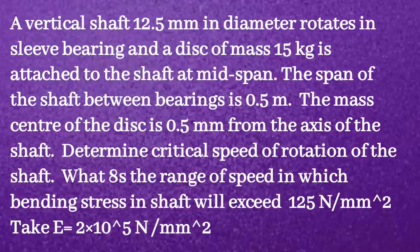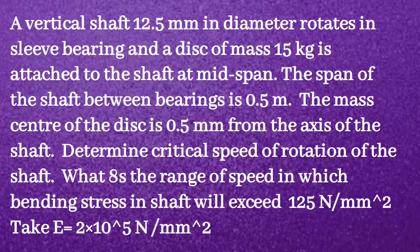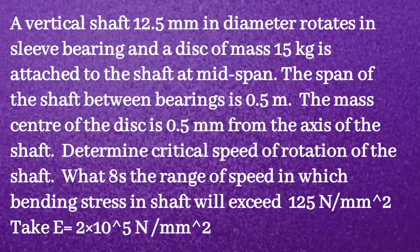Given question: a vertical shaft 12.5 mm in diameter rotates in a sleeve bearing, and a disc of mass 15 kg is attached to the shaft at mid-span. The span of the shaft between bearings is 0.5 m. The mass center of the disc is 0.5 mm from the axis of the shaft. Determine the critical speed of rotation of the shaft. What is the range of speed in which bending stress in the shaft will exceed 125 N/mm²? Take E = 2×10⁵ N/mm².